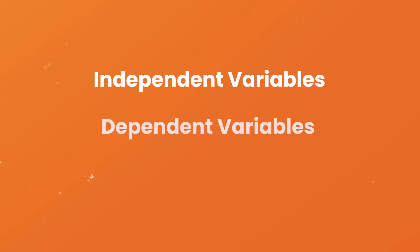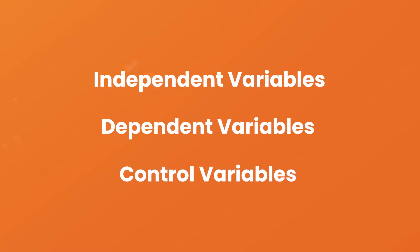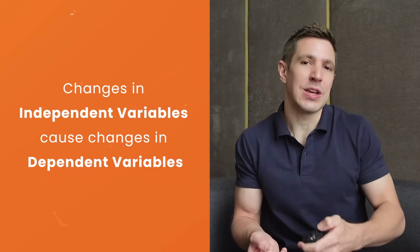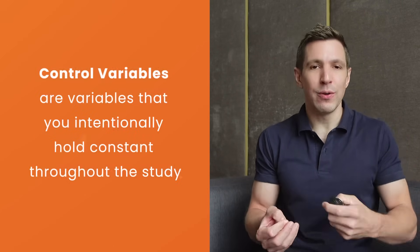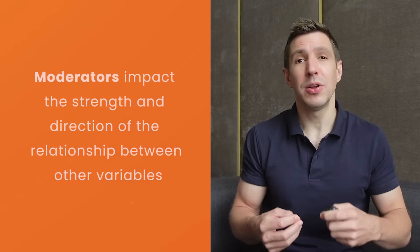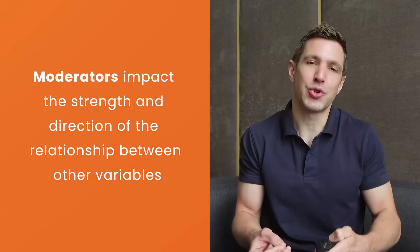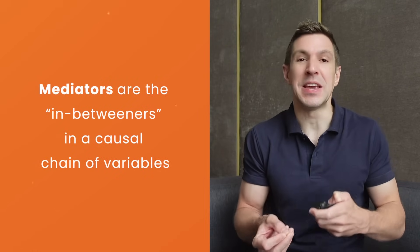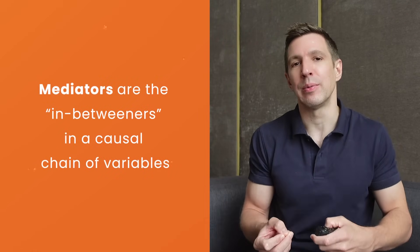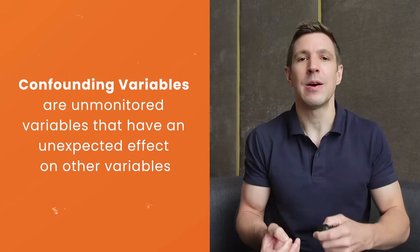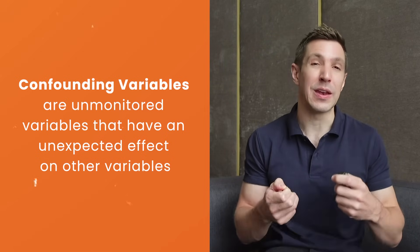Alright, we've covered quite a lot of ground, so let's quickly recap. Independent, dependent, and control variables form the big three and are the most common ones you'll come across. Changes in the independent variable cause a change in the dependent variable, while control variables are those that the researcher intentionally holds constant throughout the study. Beyond the big three, moderating variables impact the strength and direction of the relationship between other variables, while mediators are the in-betweeners in a causal chain. Last but not least, confounding variables are those pesky variables that can have an unexpected effect on other variables, potentially leading you to draw incorrect conclusions.